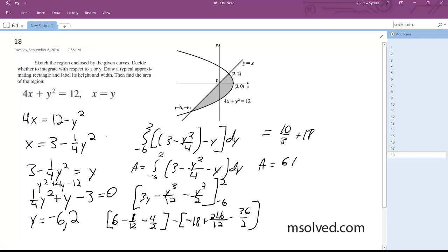And we get 10 over 3 plus 18. Area is equal to 64 over 3. That's it. We're done.